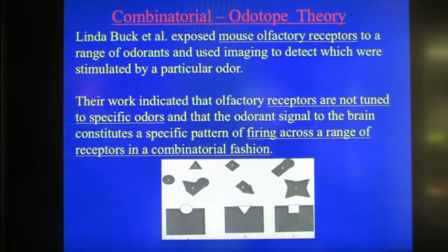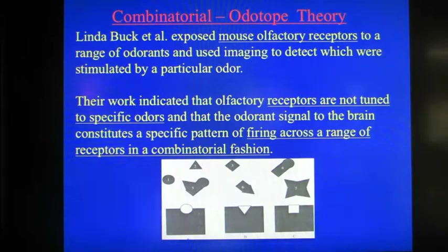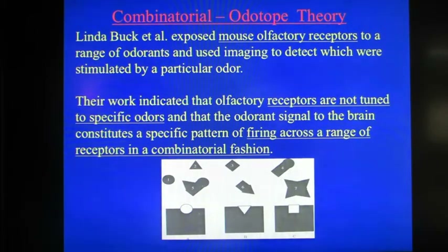In further work, they exposed a series of mouse olfactory receptors to a range of odorants, and used imaging techniques to detect which receptors were stimulated by a particular odor. What they found is that the olfactory receptors were not tuned to specific odorants, and that the odorant signal to the brain constitutes a pattern of firing across a range of different receptors in a combinatorial fashion. For example, odorant number one would fit into just receptor A, but odorant number five would fit into receptor A plus receptor B, and odorant number six would fit into receptor B and receptor C — so in a combinatorial fashion.